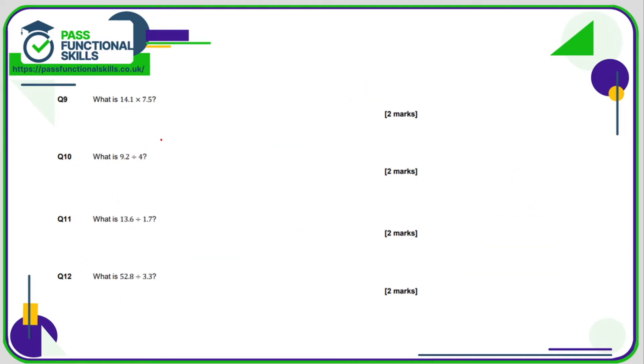Question number nine. What's 14.1 multiplied by 7.5? Well, first of all, let's work out what 141 times by 75 is. So start with the 5. 5 ones are 5. 5 fours are 20. 5 ones are 5. 6, 7. Put in a zero. This is the 7 of 70. 7 times 1 is 7. 7 fours are 28. 1 seven is 7. 8, 9. Let's add these up. 5, 7, 15, 10.